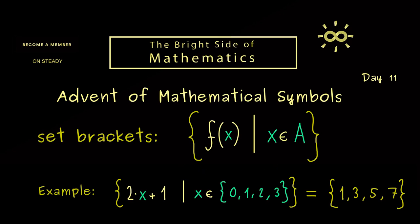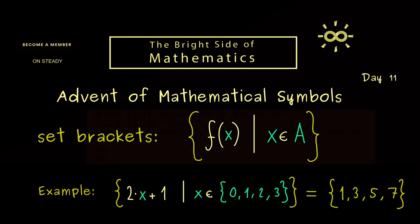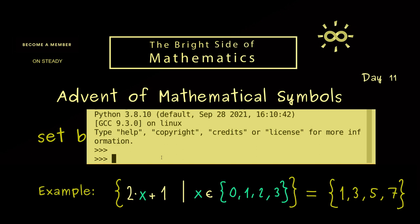As a fun fact, I can tell you this set construction is also included in the programming language Python. So you can use the curly brackets and type 2 times x plus 1, 4. So you can see the 4 as the vertical line.